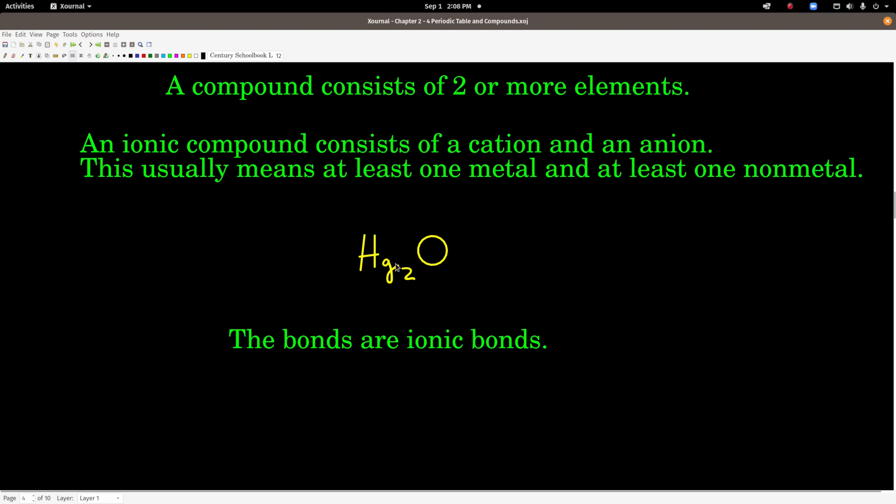When you write the formula for an ionic compound, the cation always goes first, the anion always goes next. Here, mercury is the cation, it's a metal, and oxygen is the anion, it's a nonmetal. The bonds, the way that these atoms are held together, are called ionic bonds. It's basically opposite charges attracting each other.